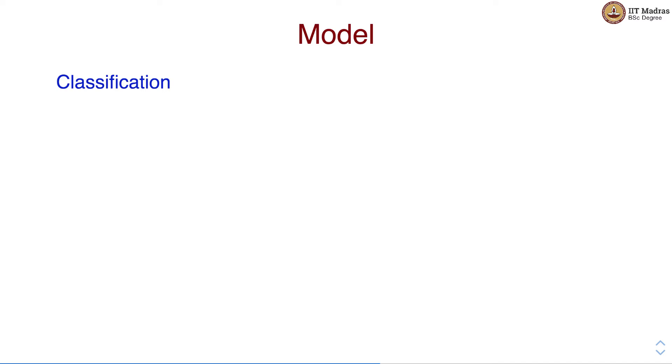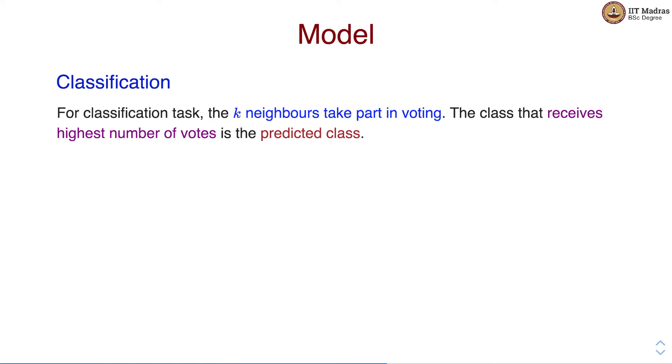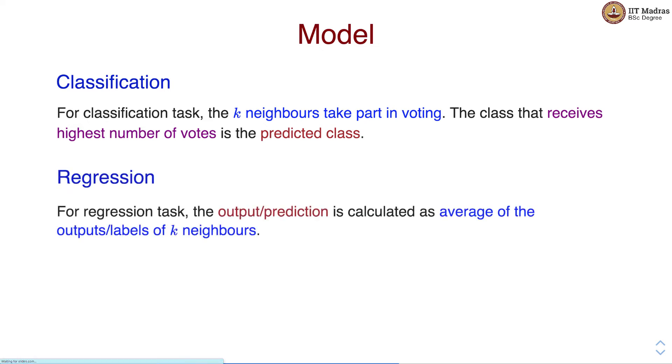Let's look at the model for KNN. As such there is no model and we store all the points that are provided as part of the training data. For classification task we first calculate KNN and these KNN take part in voting. The class that receives highest number of votes is the predicted class. For regression task the output is calculated as an average of the outputs or labels of KNN.